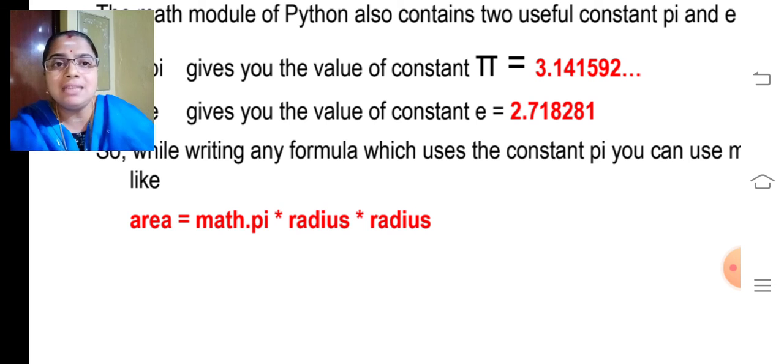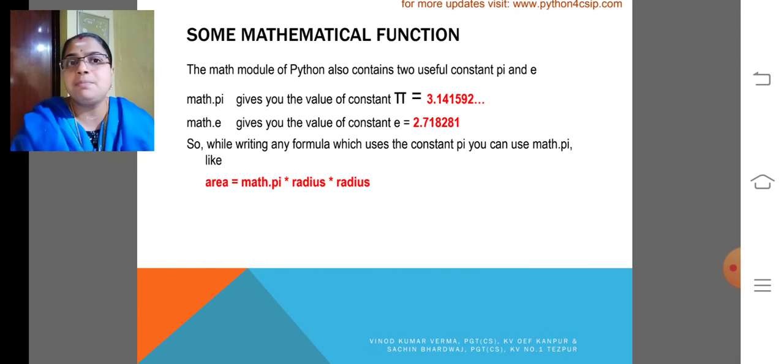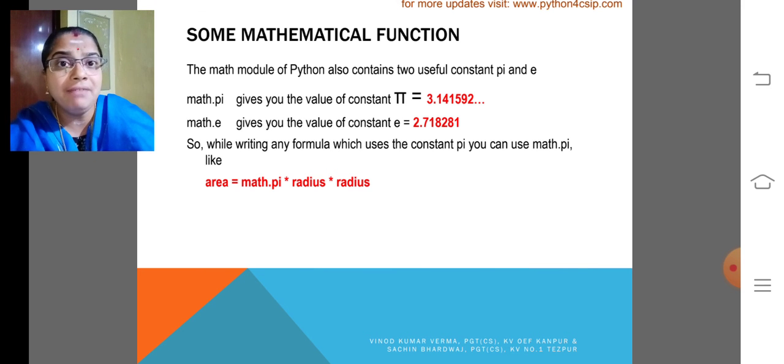A equal to math.pi into radius into radius. So, math is a standard library. Within that, pi is assigned with 3.141592, etc. 15 digit precision is available for mathematics pi value.